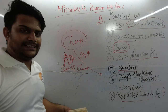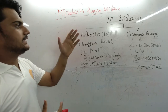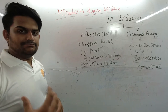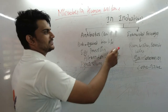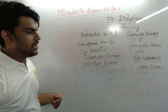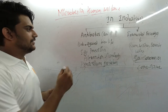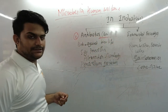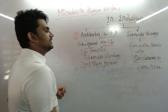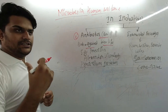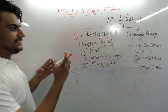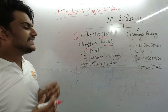Now we move to industrial uses of microorganisms. There are mainly two ways microorganisms are used in industry: fermentation of beverages and the production of antibiotics. The word 'antibiotic' is a Greek word meaning 'against life' - a chemical that acts against the life of disease-causing organisms.